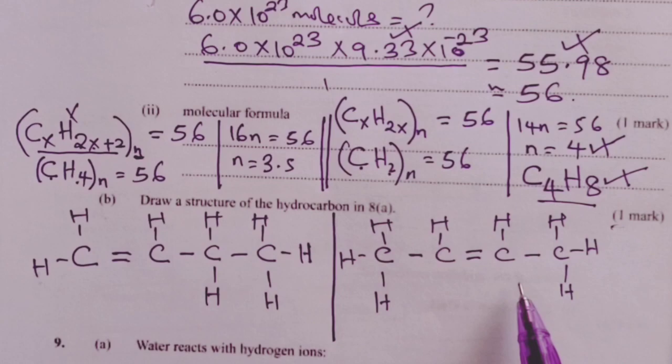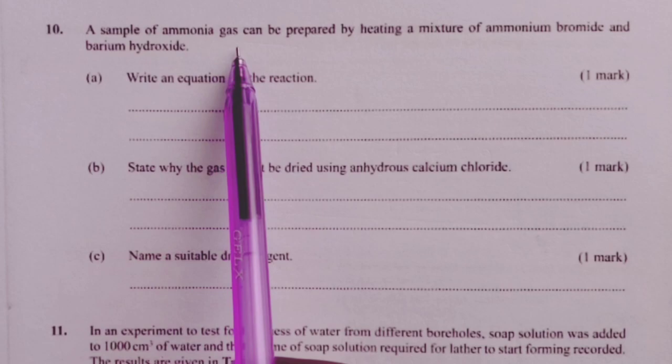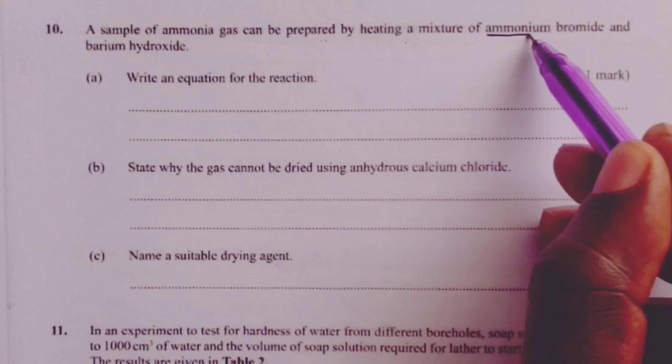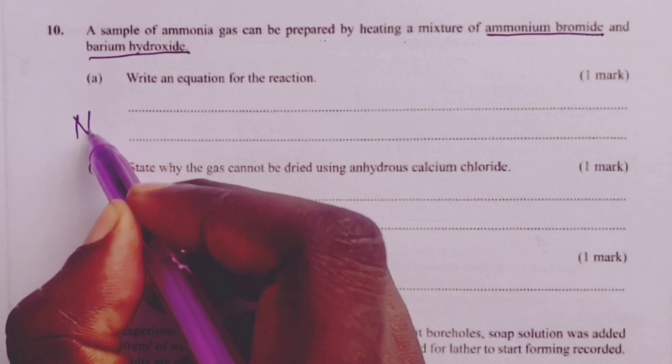We proceed to the next question and that is question number 10. Question 10 was borrowed from nitrogen and its compounds, specifically on ammonia gas. A sample of ammonia gas can be prepared by heating a mixture of ammonium bromide and barium hydroxide. The first question is asking us to write a balanced equation.